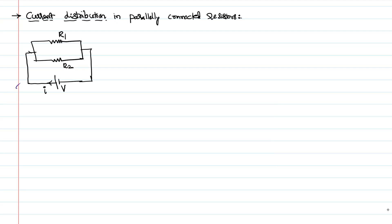Here a current I starts. After coming to the junction, the current is distributed across two resistors as I1 and I2. As per the conservation of charge, I is equal to the sum of the two currents: I1 plus I2.